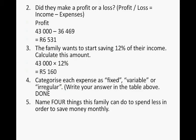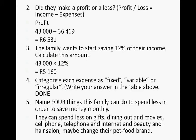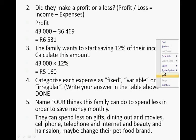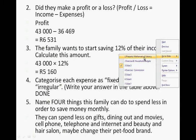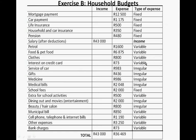Name four things that this family can do to spend less money in order to save more money monthly. They can spend less on gifts, on dining out and movies, on cell phones, telephone and internet, and on beauty and hair salon. They could also change their pet food brand. This family doesn't spend that much overall, but they do spend a lot on food and pet food.